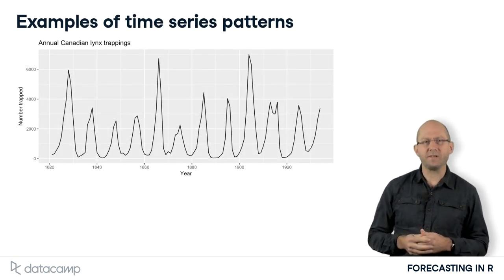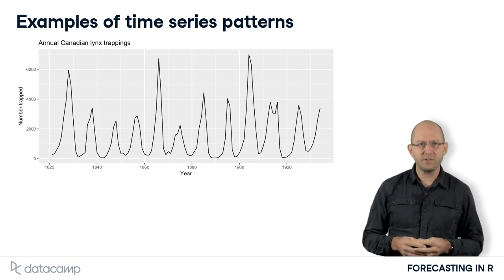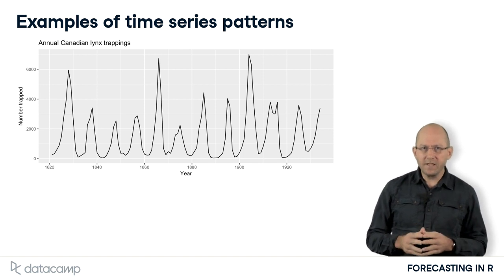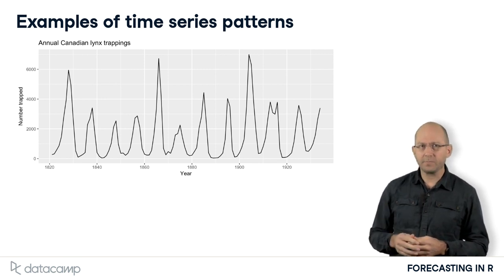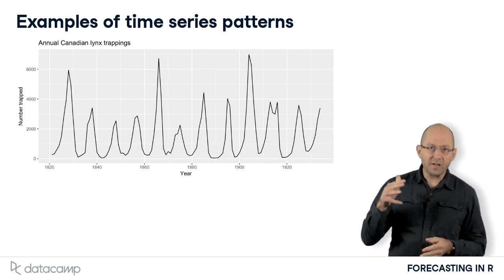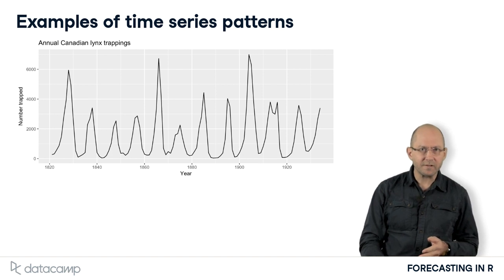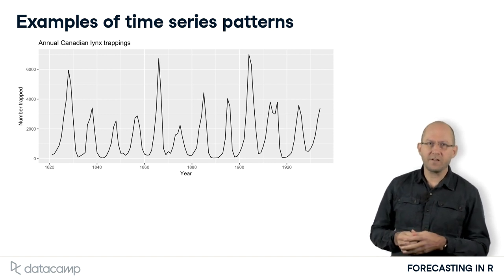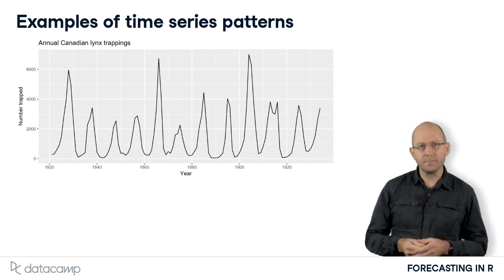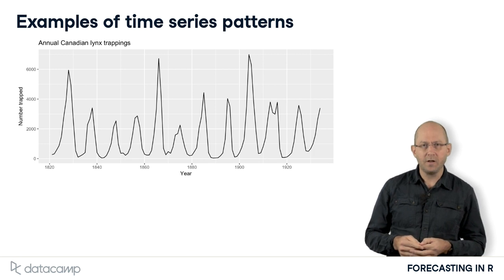My last example is a famous time series — the number of lynx trapped annually in the Hudson Bay region of Canada from 1821 to 1934. Lynx are medium-sized wild cats that used to be trapped for their fur. Because this is annual data, it cannot be seasonal. The population of lynx rises when there is plenty of food, and when the food supply gets low, they stop breeding, causing the population to plummet. The surviving lynx then have plenty of food, start to breed again, and the cycle continues. The length of these cycles varies from between 8 and 11 years. This is also a good example to show how variable the magnitude of cyclic patterns can be, with the largest peak being more than three times the size of the smallest peak.